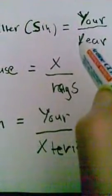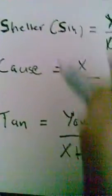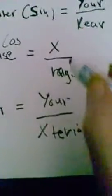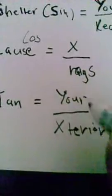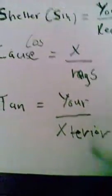In other words, sin equals y over r. Cause, which is cos, x-rays tan your exterior.